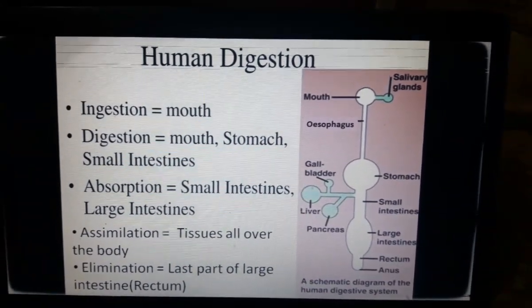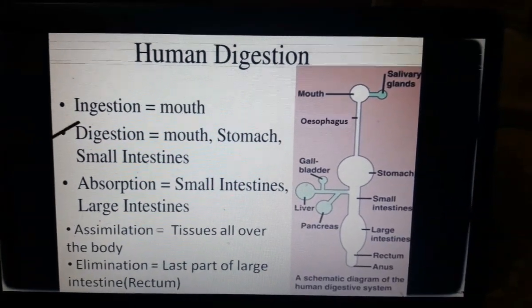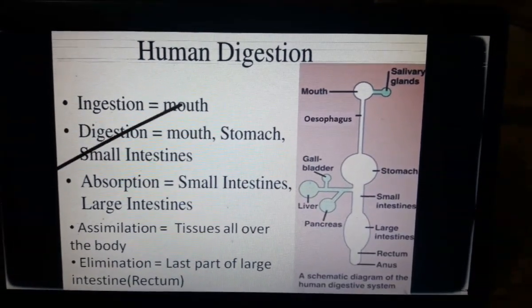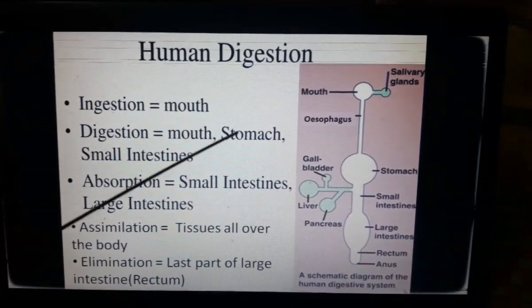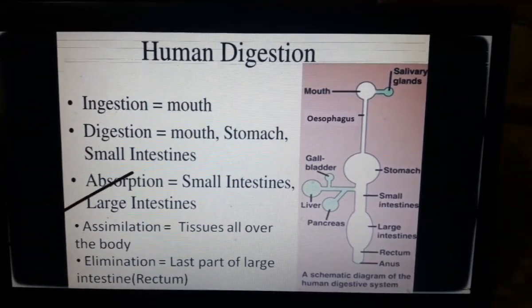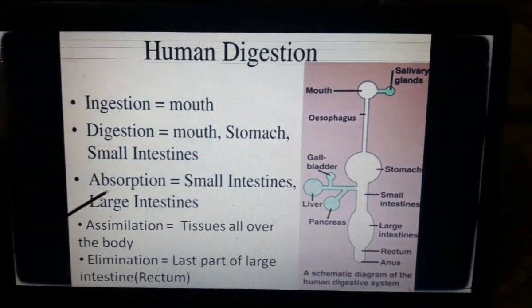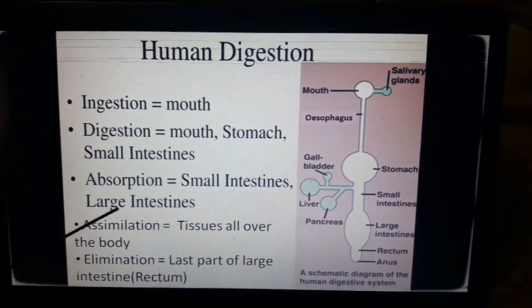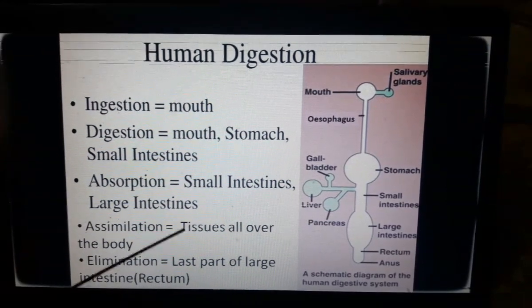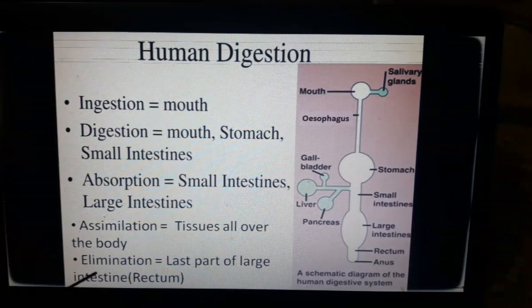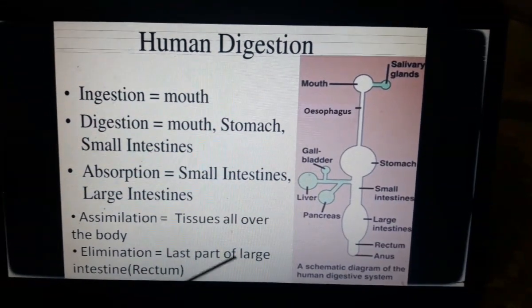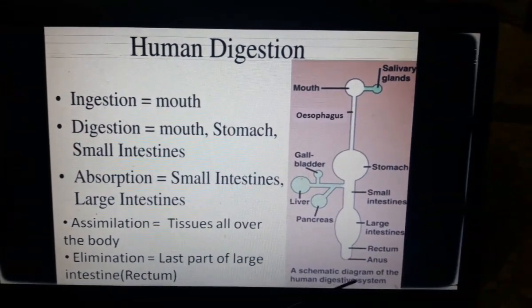Human digestion begins with the process of ingestion in the mouth. Then is digestion in mouth, stomach and small intestine. Absorption in small intestine and large intestine. Then is the assimilation in tissues all over the body, and the last is elimination in the last part of the large intestine, that is rectum.